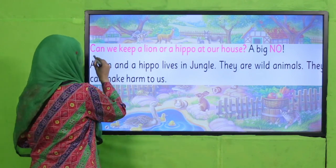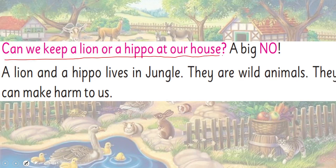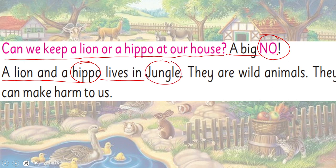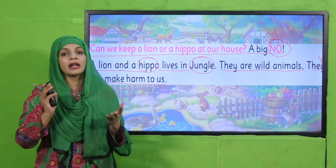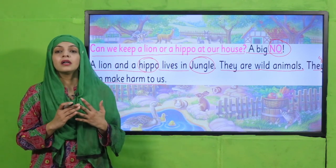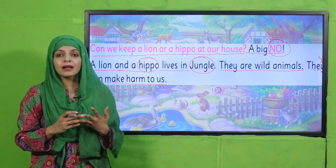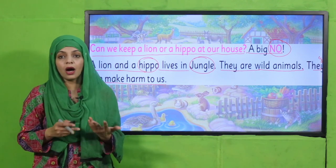Can we keep a lion or a hippo at our house? A big no. A lion and a hippo live in the jungle. They are wild animals. They can cause harm to us. Lion or hippo can only live in the jungle, and that is why they are wild animals. We cannot keep them in the house because they can be harmful.